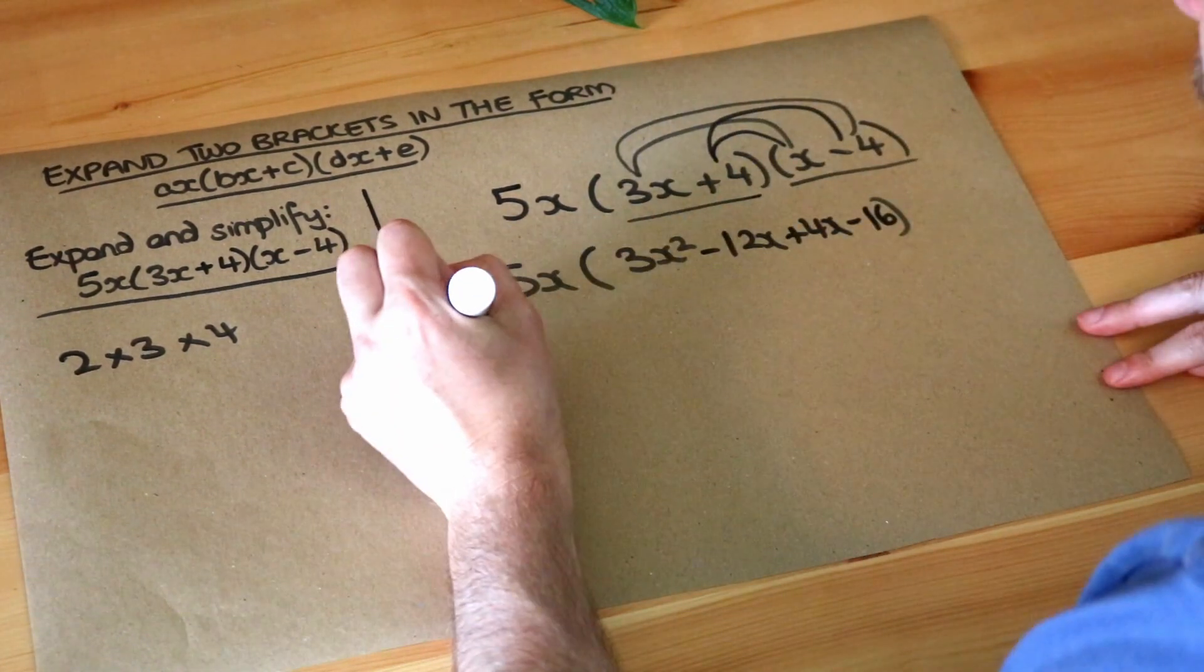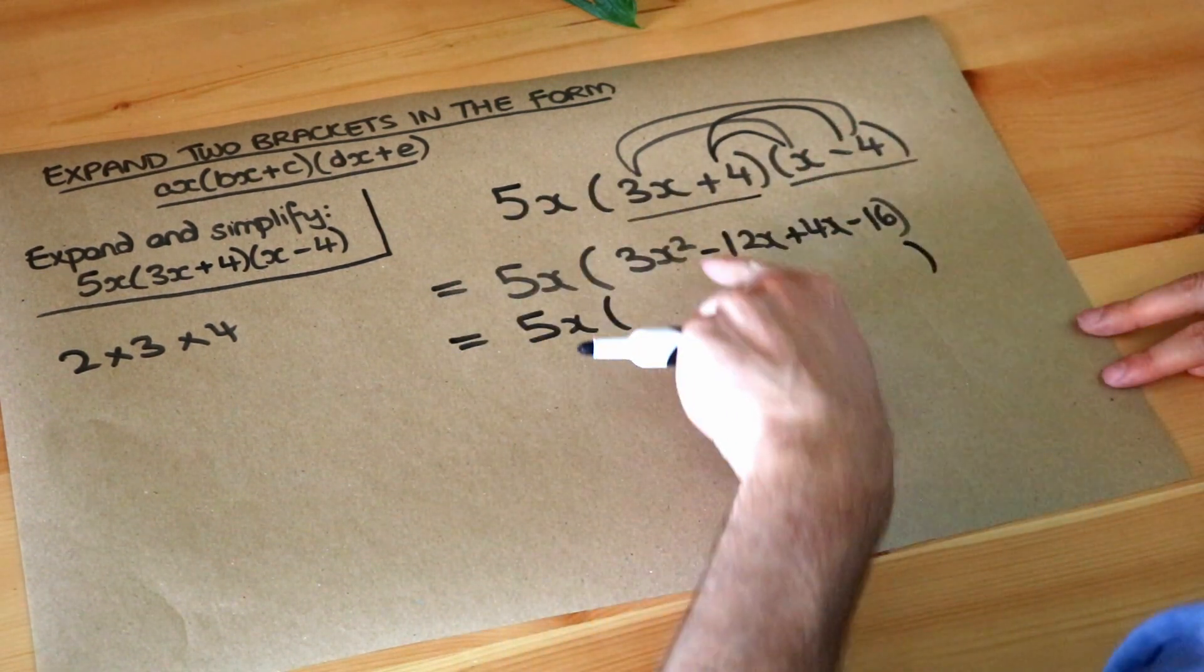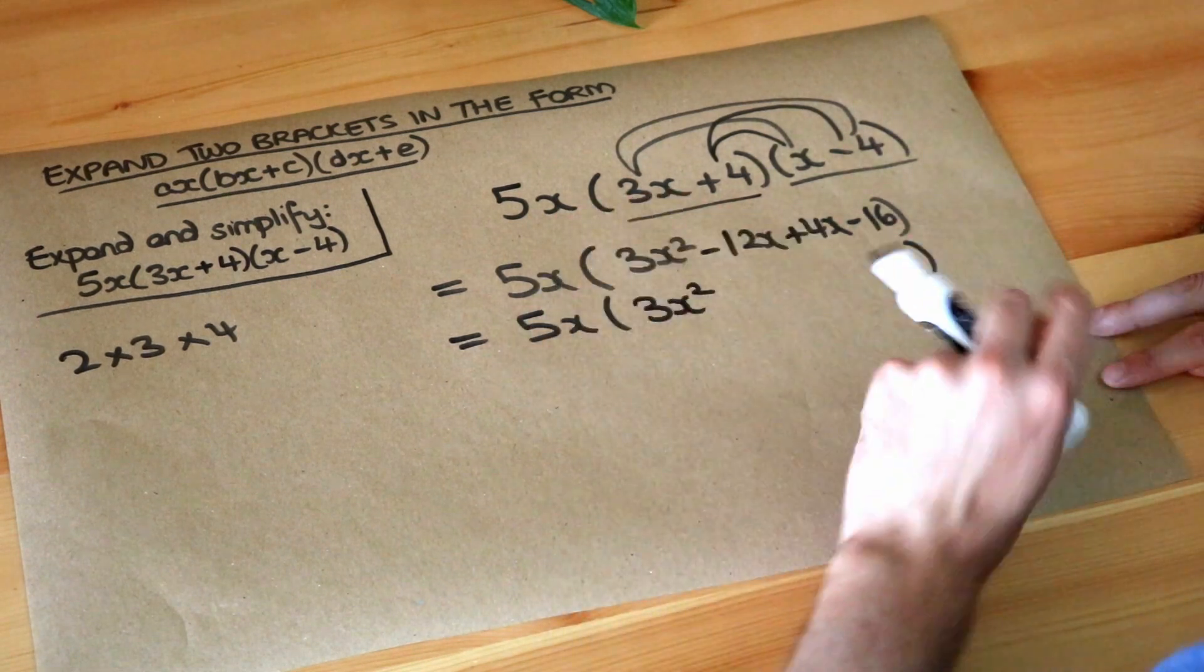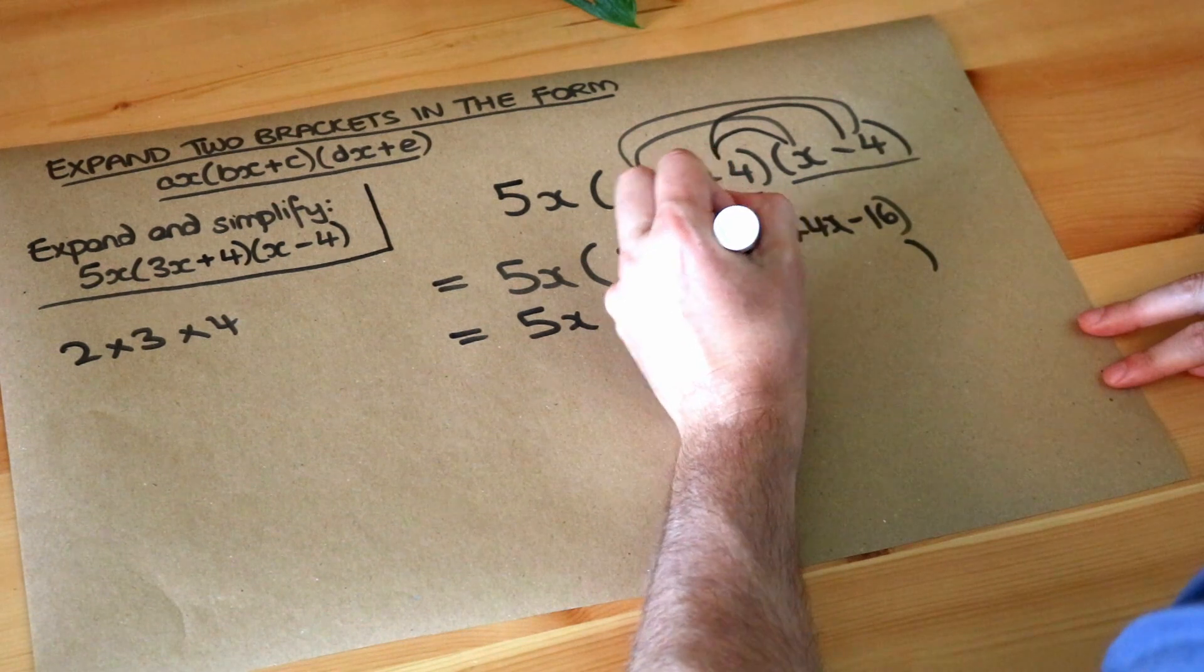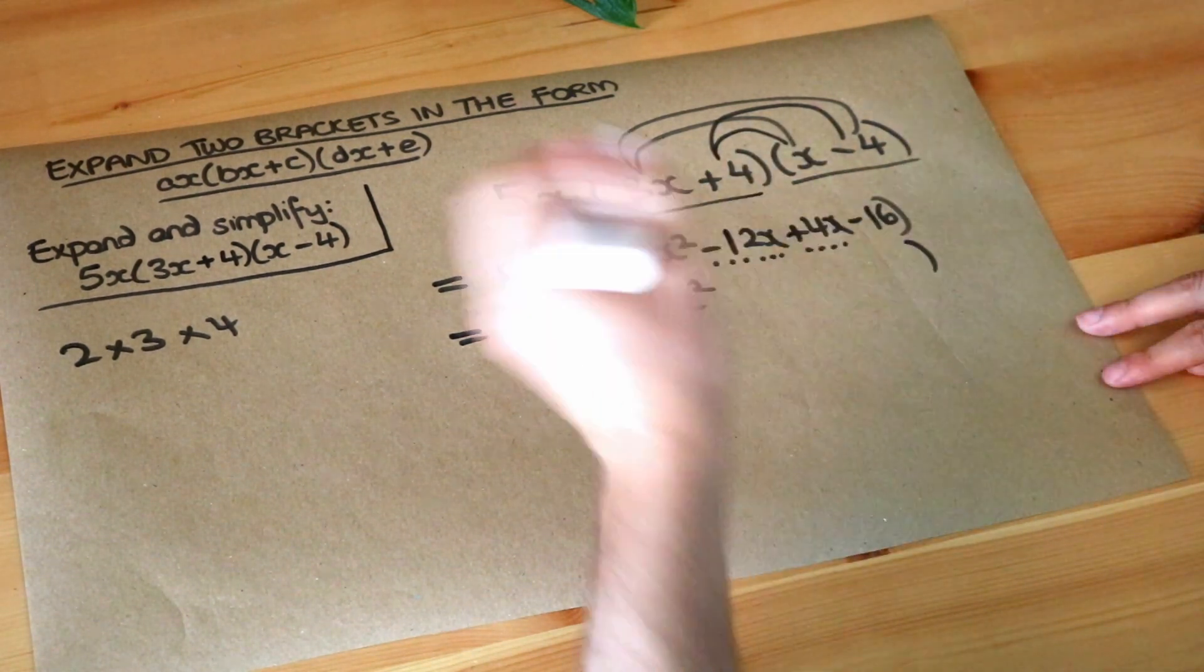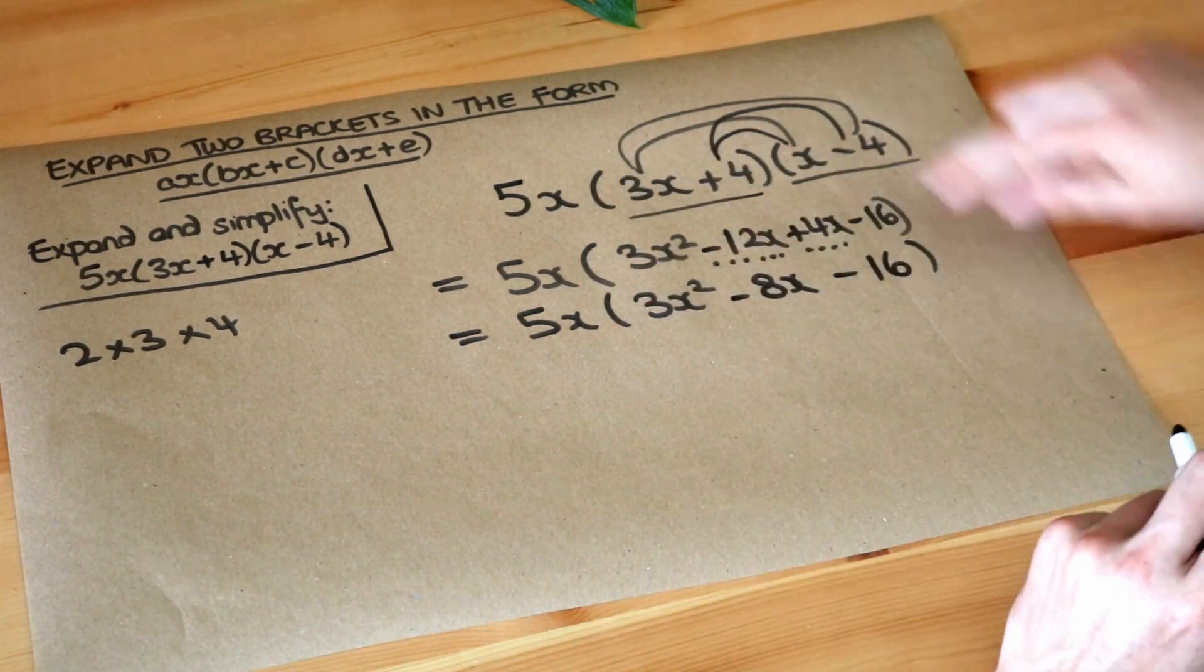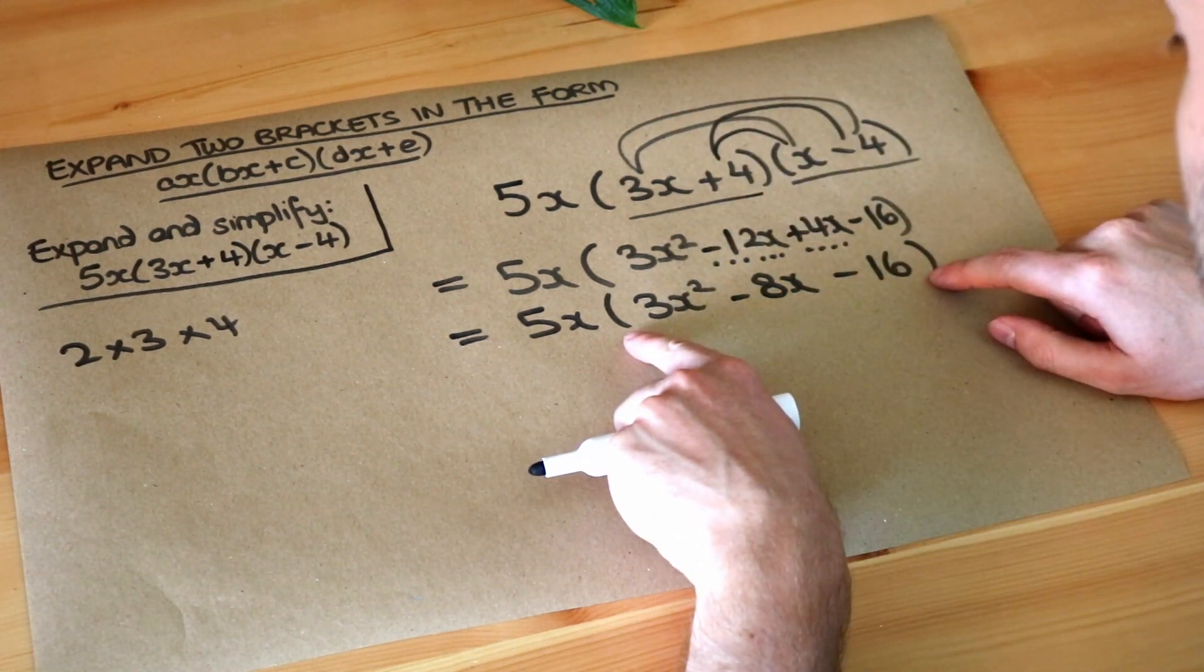And then we can just tidy up. We're going to collect like terms inside that bracket. So we've only got one x squared term, so that just stays as 3x squared. But we've got minus 12x plus 4x, so we can collect those two terms together. Minus 12 plus 4 is minus 8, so it's minus 8 lots of x. And finally, we've got the minus 16. So we've now multiplied out these two brackets to just get one big bracket.